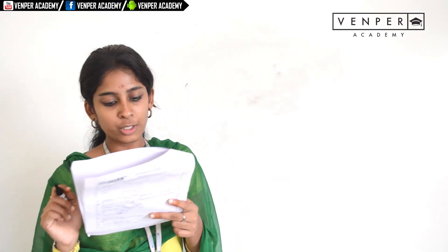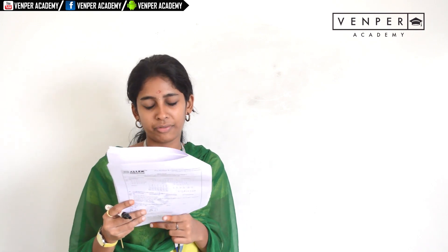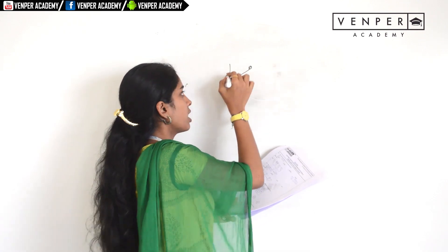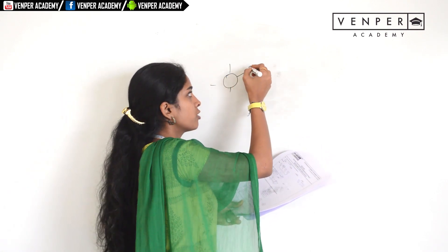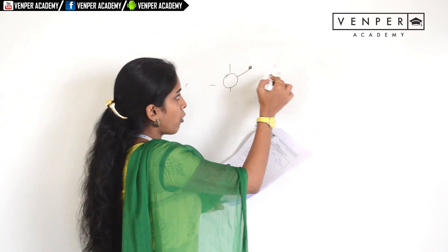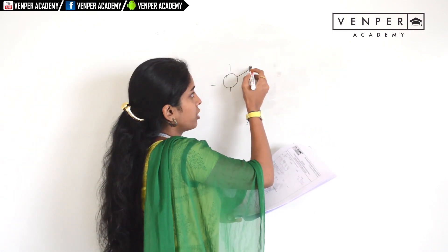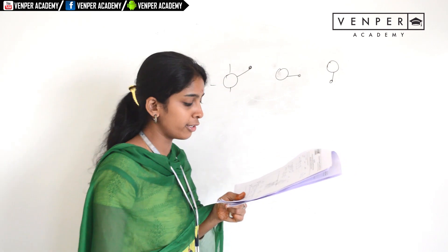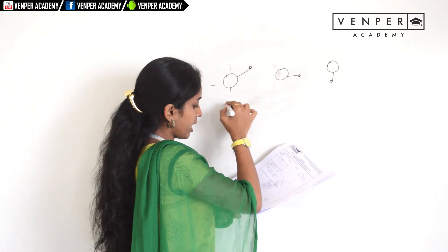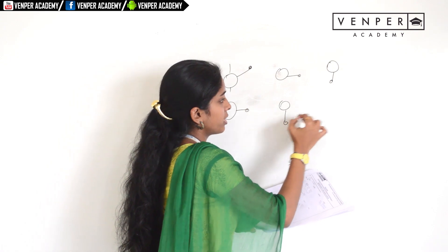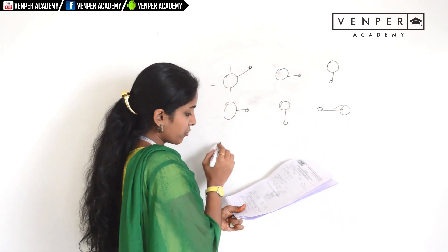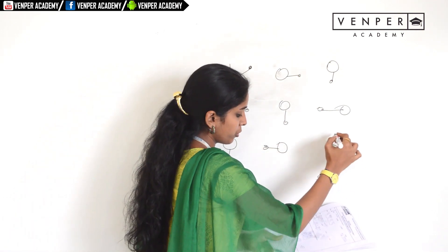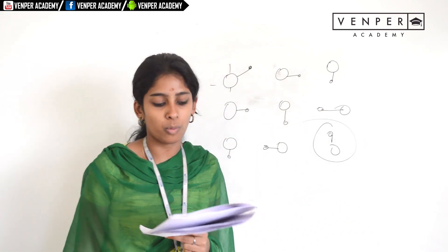Question twenty-three: select a suitable figure to complete the pattern. A point on a circle rotates in a clockwise position. If the point is at a certain position, in the next step it moves clockwise. Following the pattern through the series, the point ends up at the top. So the answer is option one.